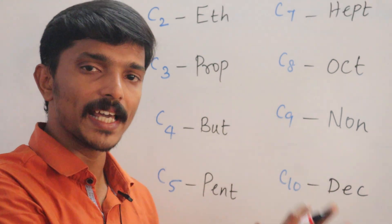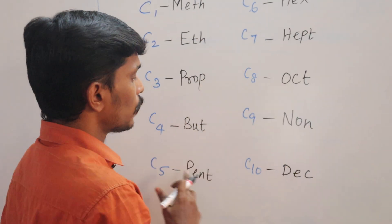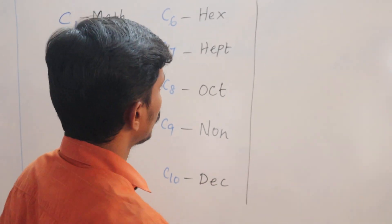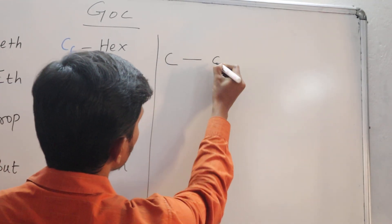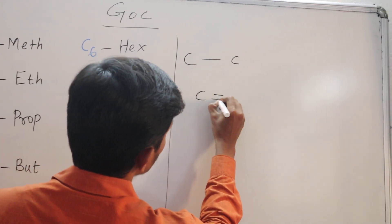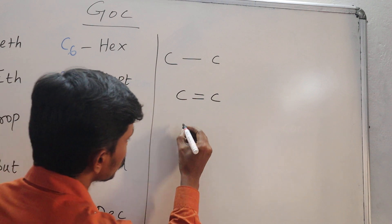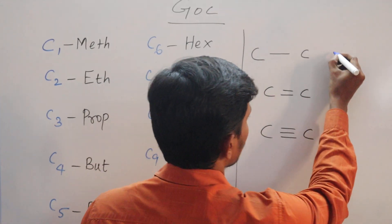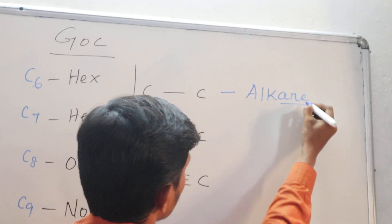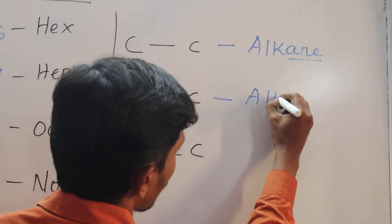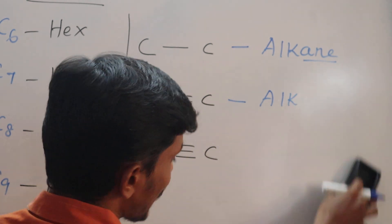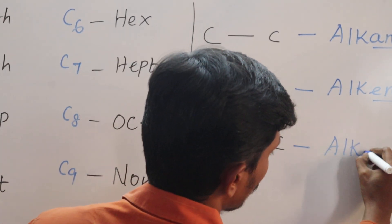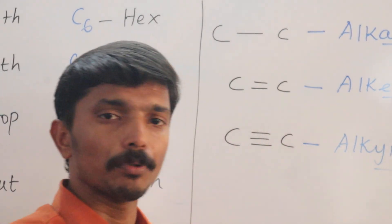Now there is also a priority order for naming the base chain. If we find organic compounds with many carbons, how do you know how to name the base? If there is a single bond, the name ends with '-ane' (Alkane). If there is a double bond, the suffix is '-ene' (Alkene). If there is a triple bond, it is '-yne' (Alkyne).